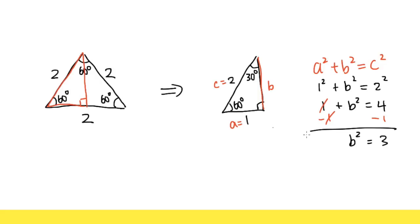At the end, we once again take the positive square root, so that the square and the square root will cancel. So, we get B is equal to square root of 3, and that's the side right here, B is square root of 3.